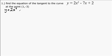This is our problem: Find the equation of the tangent to the curve y equals 2x squared minus 7x plus 2 at the point (1, -3).